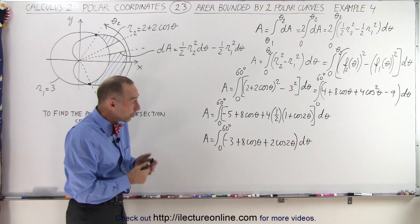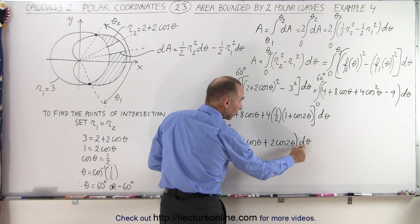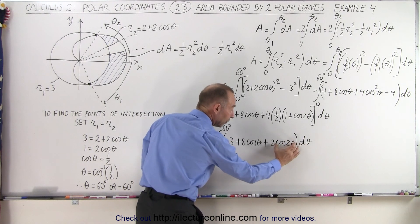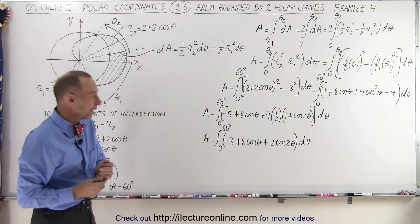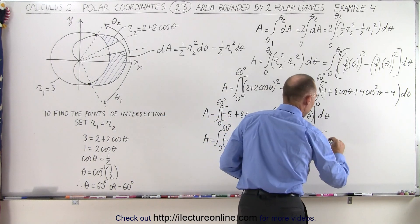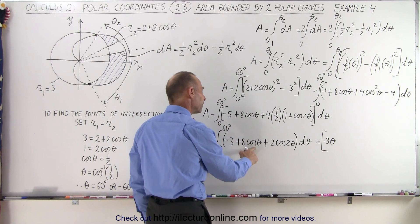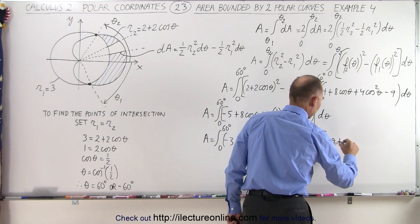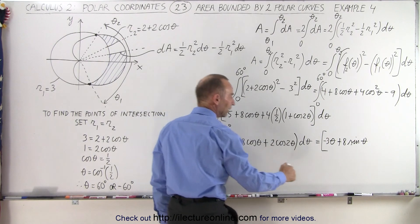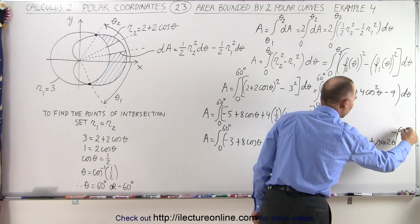When we integrate, we note that for the cos 2θ term, the factor of 2 in the derivative accounts for the chain rule. Integrating term by term: minus 3 dθ gives minus 3θ; 8 cosθ gives 8 sinθ; and 2 cos 2θ gives sin 2θ. So the result is minus 3θ plus 8 sinθ plus sin 2θ, evaluated from 0 to 60 degrees.